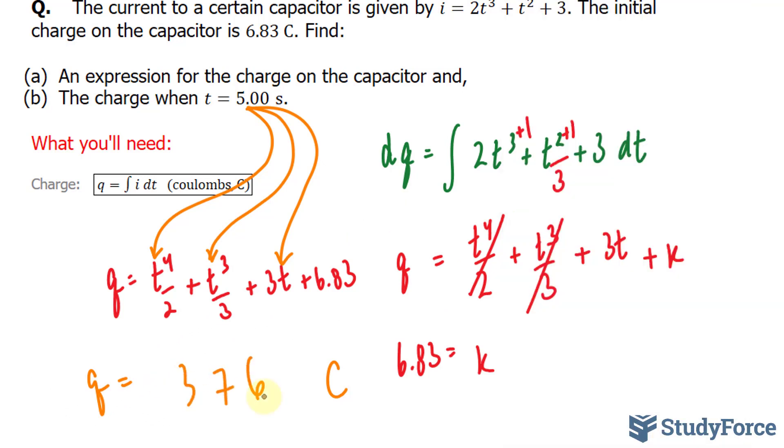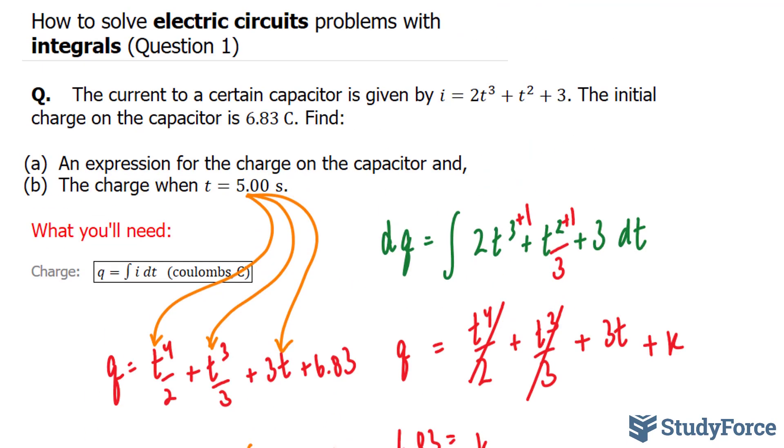376 Coulombs. That's it. That is how to solve electric circuit problems with integrals. Make sure to watch question 2, where we look at a voltage across a capacitor problem.